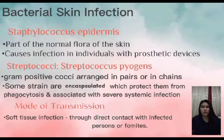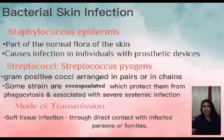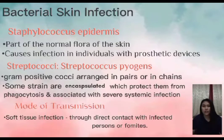Staphylococcus epidermidis is part of the normal flora of the skin and is commonly associated with stitch abscess, UTI, and endocarditis, causing infection in individuals with prosthetic devices. Streptococcus pyogenes is a gram-positive cocci arranged in pairs or chains. Some strains are encapsulated, which protects them from phagocytosis and is associated with severe systemic infection.